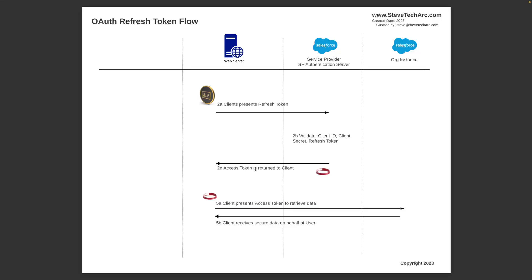The refresh token can be revoked by the user. Typically, access tokens have a valid duration in hours. Refresh tokens can be set to days, weeks, or not to expire, but they can be revoked. The refresh token is not good as an access token — it has to be exchanged for an access token. So the access token is what grants access, and the refresh token allows the user to get a fresh access token.